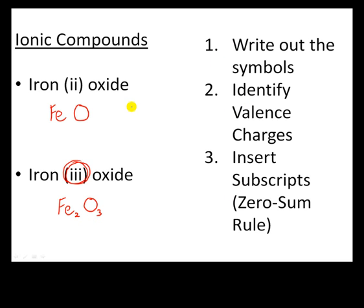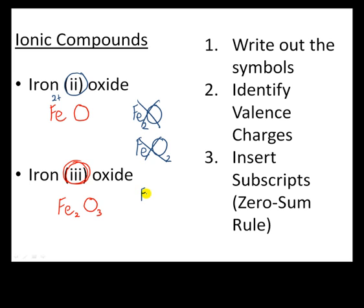A common error students make is seeing the Roman numeral in the name and mistakenly placing that number directly as a subscript on Fe or O. For iron 2 oxide, some will write Fe₂O or FeO₂ — both are wrong. Similarly for iron 3 oxide, writing Fe₃O or FeO₃ is incorrect. Remember: the Roman numeral tells you the valence charge of the iron, not the subscript. You must still use the zero-sum rule to determine the subscripts.